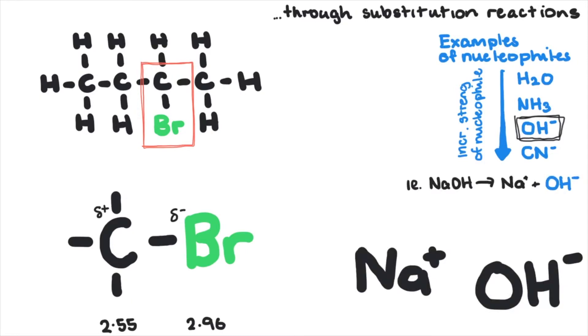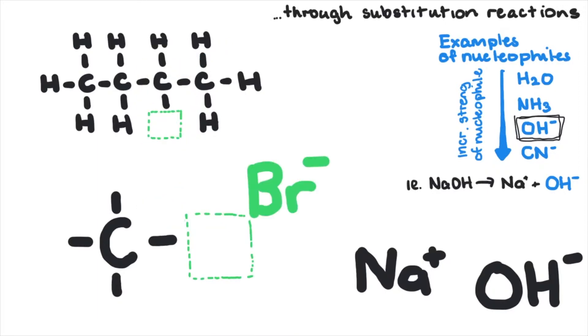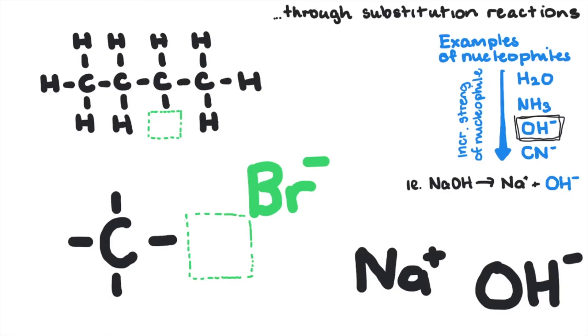This will induce a dipole on this carbon. This pushes the electrons closer to the halogen and forces it to leave as a bromide ion, and the hydroxide gets its place in the molecule resulting in butan-2-ol and sodium bromide. A simple substitution reaction.